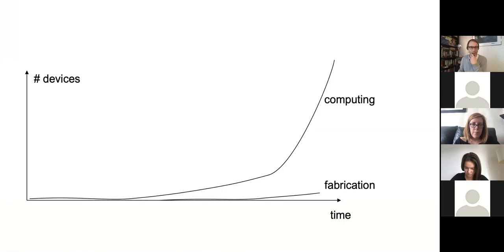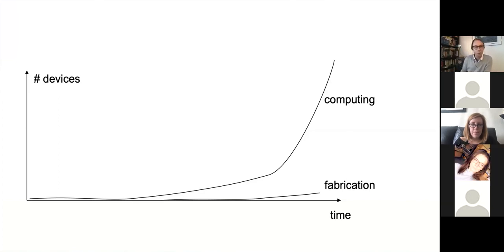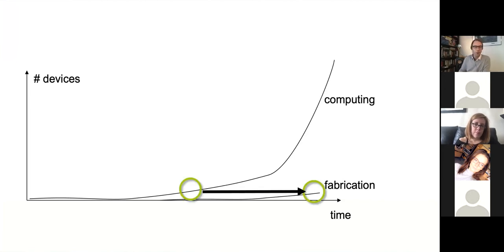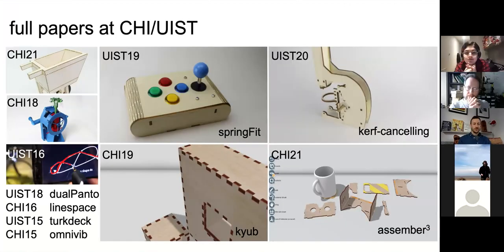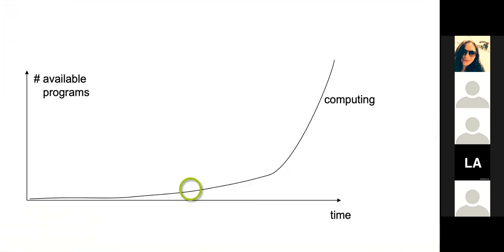If we go back to that timeline, we're not quite at that point yet — not at the point where we need to make a pivot from millions of users to billions of users. With fabrication, if you look at laser cutting, there may be a few thousand laser cutters around the world in different fab labs, research labs, and educational institutes — but certainly no millions of users yet. So there has been another pivotal moment in digital computing that I'm trying to understand in my research.